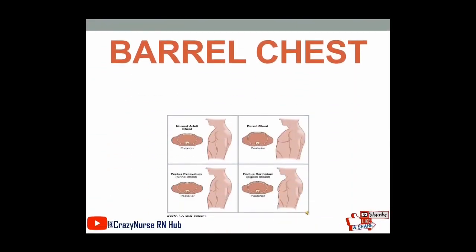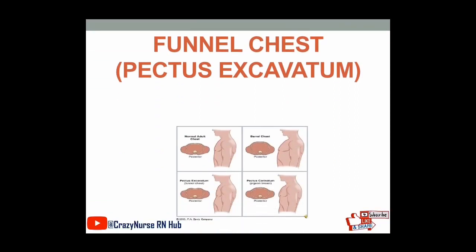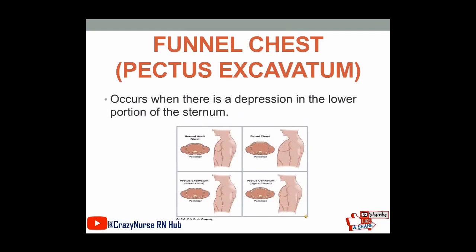Barrel chest occurs as a result of overinflation of the lungs, which increases the antero-posterior diameter of the thorax. That means in your barrel chest, there is an expansion of the lungs, so the diameter between your front and back portion of your thorax is increased. Funnel chest or pectus excavatum occurs when there is a depression in the lower portion of the sternum, as seen in the picture.